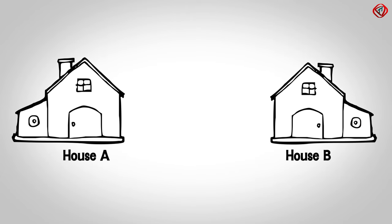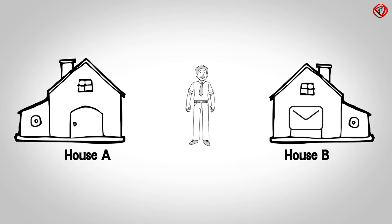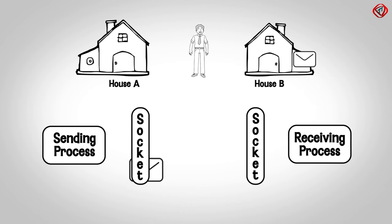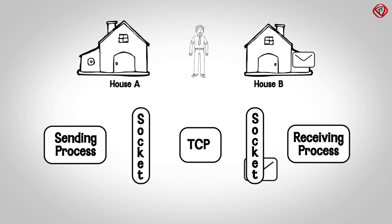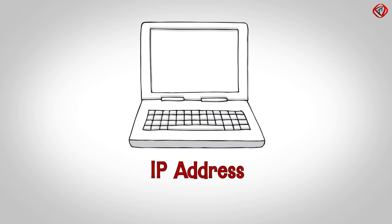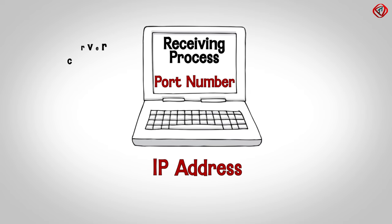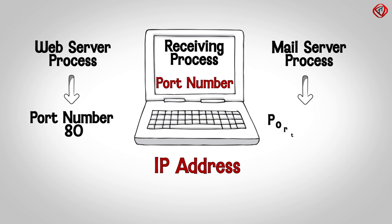The socket is also referred to as the Application Programming Interface or API between the network application and the network. A socket can be considered as the door of a house — you write a letter and put it in a letterbox, and the postman delivers it to house B. Similarly, the sending process in the client pushes the message through its socket, and the transport layer protocol — for example TCP — delivers the message to the receiving process in the server through its socket. The receiving end system is identified by the IP address, and the receiving process within the end system is identified by the port number. For example, a web browser process uses port number 80, and a mail server process uses port number 25.